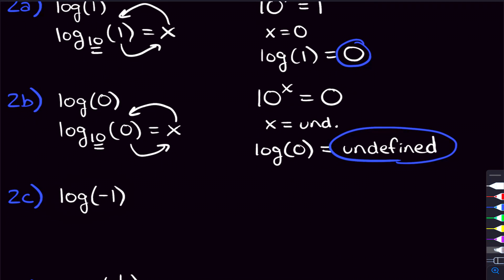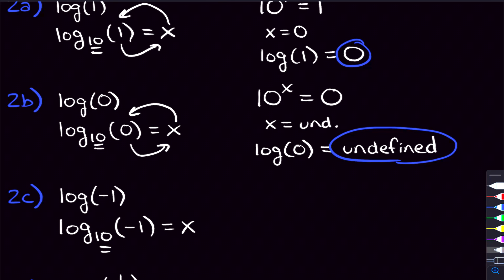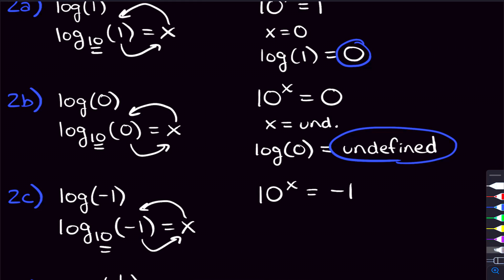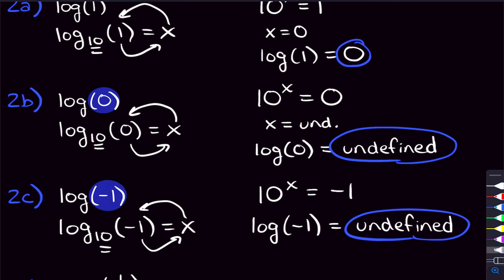What about log of negative one? We put base 10, set it equal to x, and do the same process: 10 to the x equals negative 1. How could you raise 10 to some power and get a negative number? That can't happen — whether it's negative 1, negative 2, or negative 3, it won't work. So again, x is undefined, and log of negative 1 is undefined. The takeaway: you can't take the log of zero or a negative number — it's undefined.